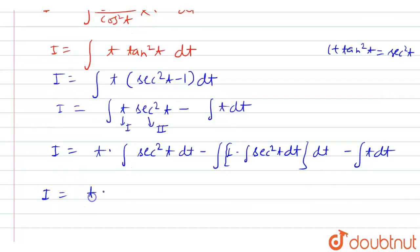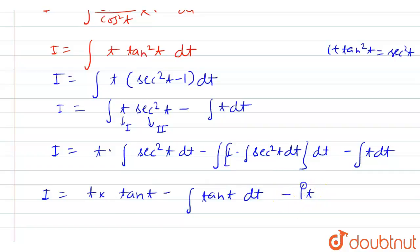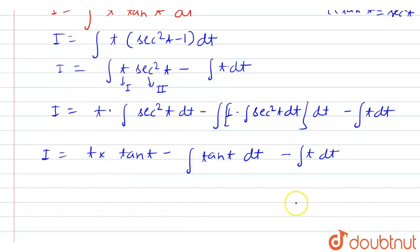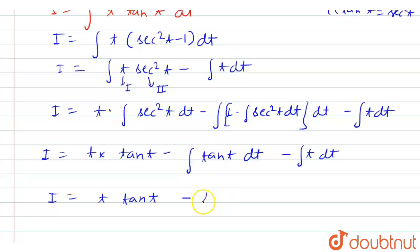We can write i equal to t into the integration of sec squared t dt, so we get i equal to t tan t minus the integration of tan t dt, which is ln|sec t|, minus the integration of t, which is t squared by 2, plus c.